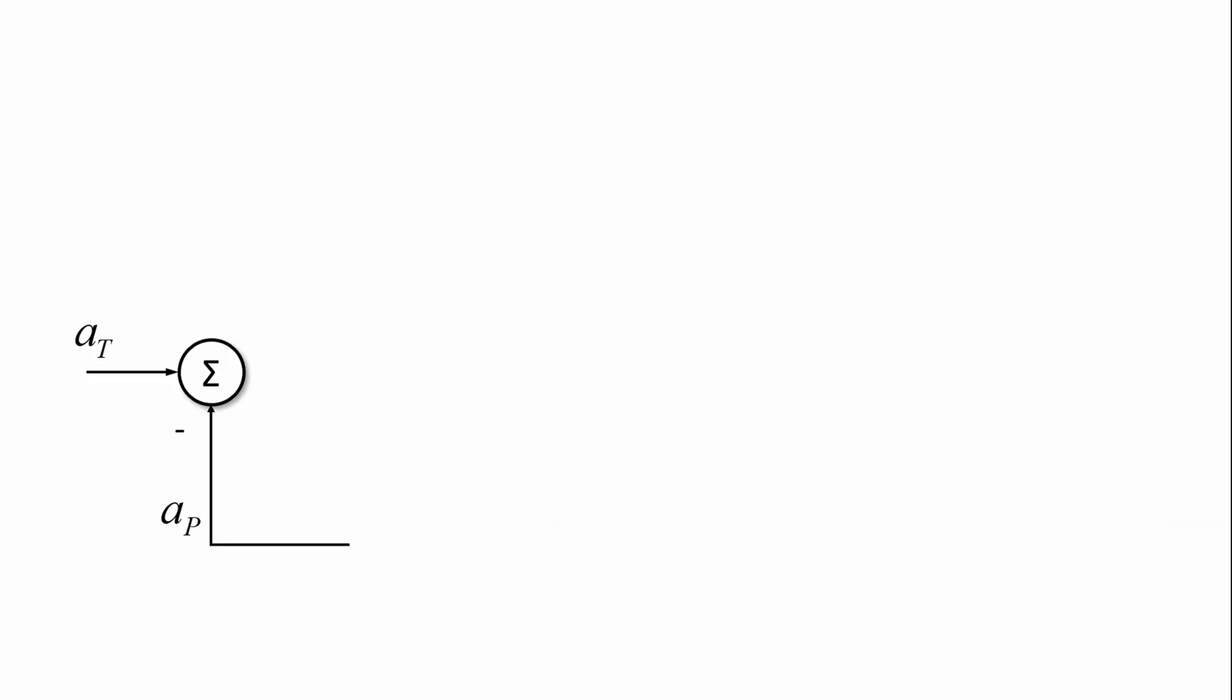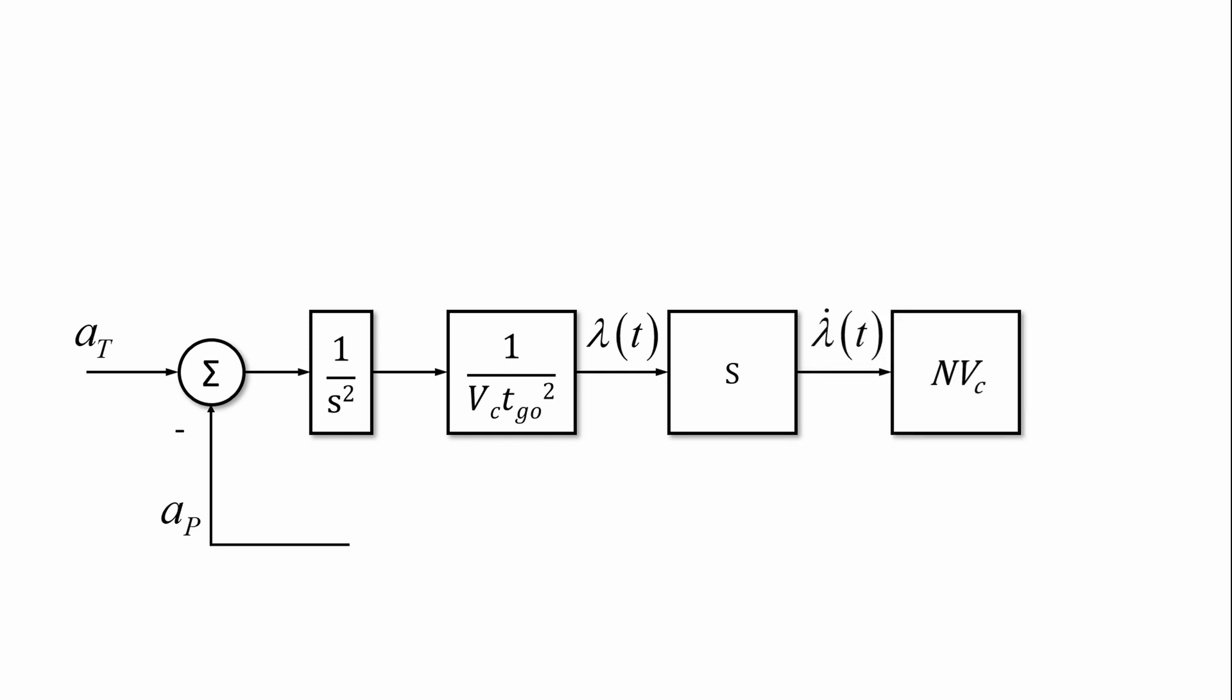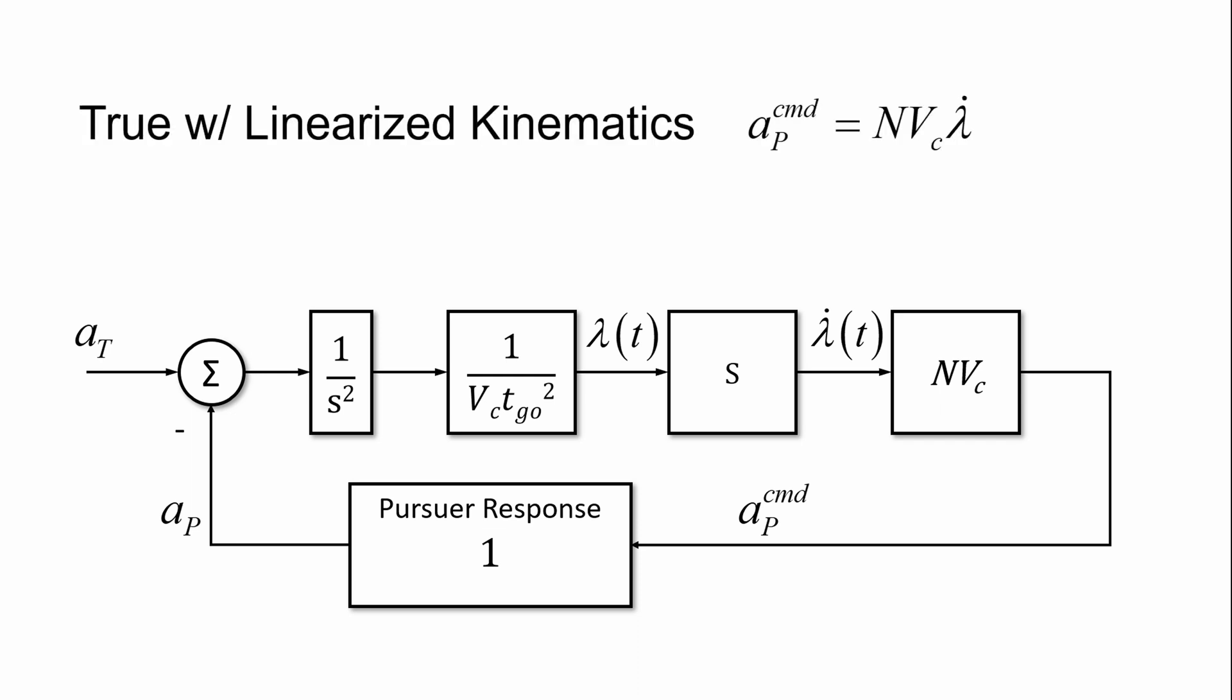We can interpret augmented pronav behavior from the vantage of the linearized homing loop. Here is the pursuer target kinematics. And then dividing by closing velocity times time to go gives us line of sight rate. Differentiating that gives us lambda dot. Multiplying by n times vc gives us the true pronav acceleration command. And then because we are assuming a perfect pursuer response throughout all of this, the command is equal to the achieved. And this is our true linearized kinematics with proportional navigation.